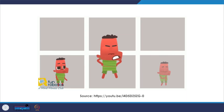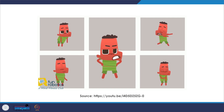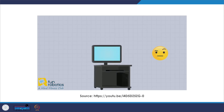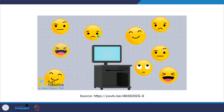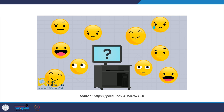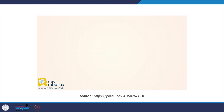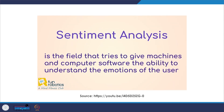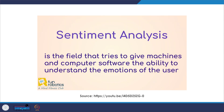Humans express their feelings on a regular basis. These feelings are called emotions. Do computers understand emotions? Is it important to understand emotions? Scientists are using different techniques including machine learning to train machines on how to understand human emotions. This is called sentiment analysis — the field that tries to give machines and computer software the ability to understand the emotions of the user.